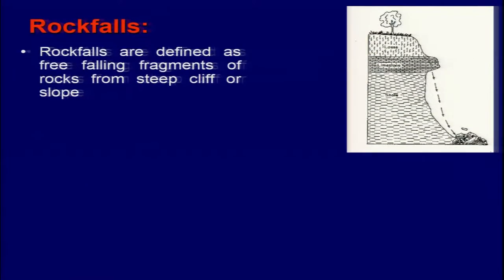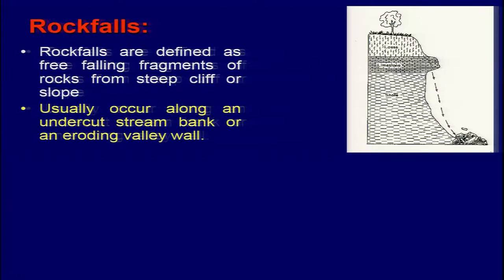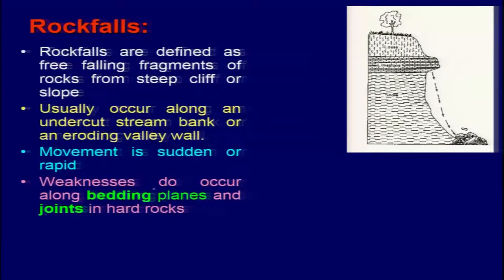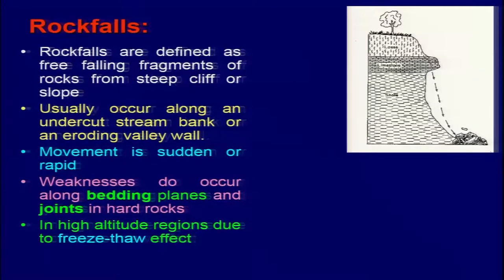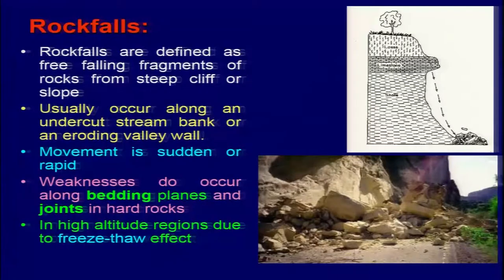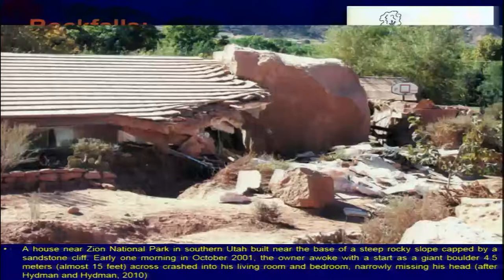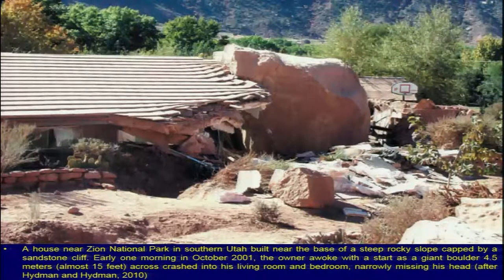Coming to falls: rock falls are defined as free-falling fragments of rocks or blocks from a steep cliff or slope, usually occurring along undercut stream banks or eroding valley walls. Movement is sudden or rapid. Weaknesses occur along bedding planes or joints in hard rock. In high-altitude regions, rock falls take place because of the freeze-thaw effect.